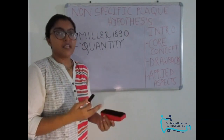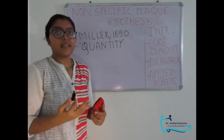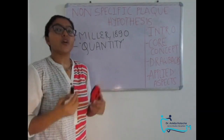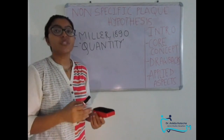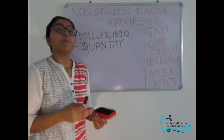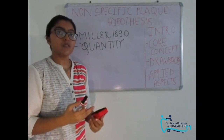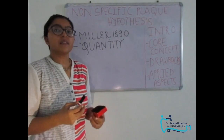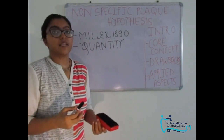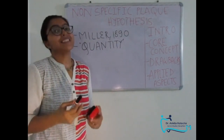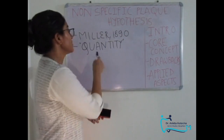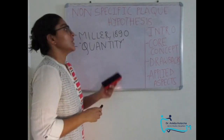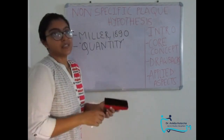If plaque is less, then fewer noxious products are released and the body will be able to neutralize them — so no disease. But if plaque is more, more noxious products are released and the body will be unable to neutralize them, and so disease will occur. This is how they justify the quantity of plaque as a role in periodontal diseases.